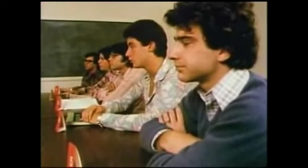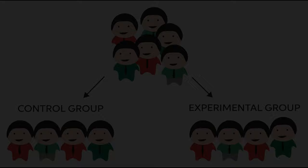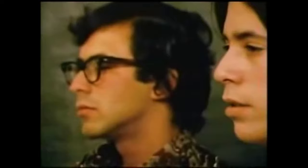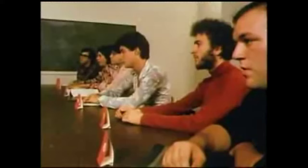In order to test whether it was indeed social pressure influencing the naive participant's decision, Asch also had a control condition where there were no confederates, only the real naive participant. Asch measured the number of times each participant conformed to the majority view, and found that on average about one third of participants placed in the situation went along and conformed with the clearly incorrect majority on the critical trials.